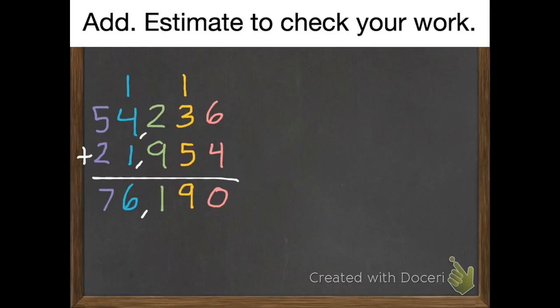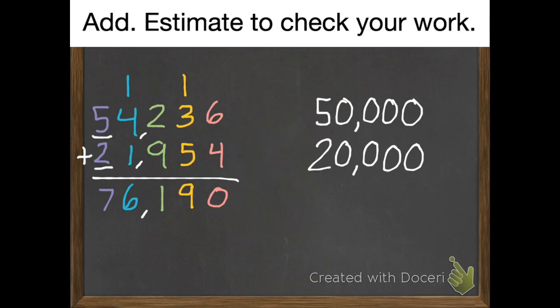My instructions say add, estimate to check your work. So I'm going to estimate these. So I'm going to round each number. Once again, I'm going to do it to the greatest place value, unless it tells me otherwise. So fifty-four thousand two hundred thirty-six will become fifty thousand. Twenty-one thousand nine hundred fifty-four will be twenty thousand. I add those. I will get seventy thousand, which is very close to seventy-six thousand one hundred ninety.